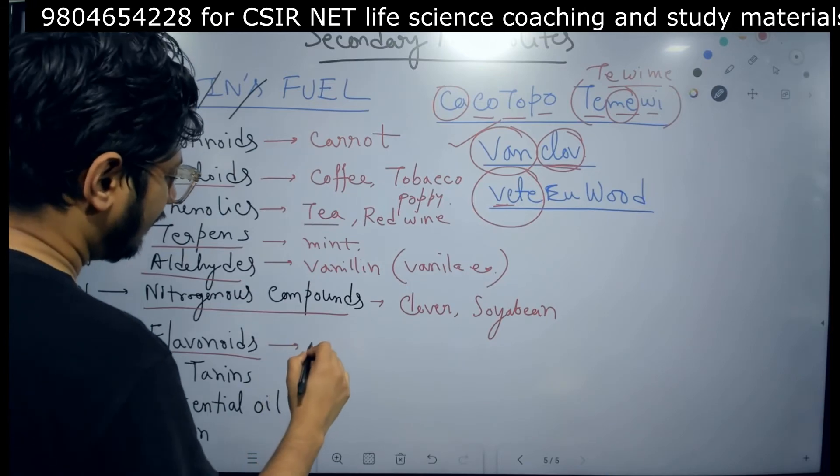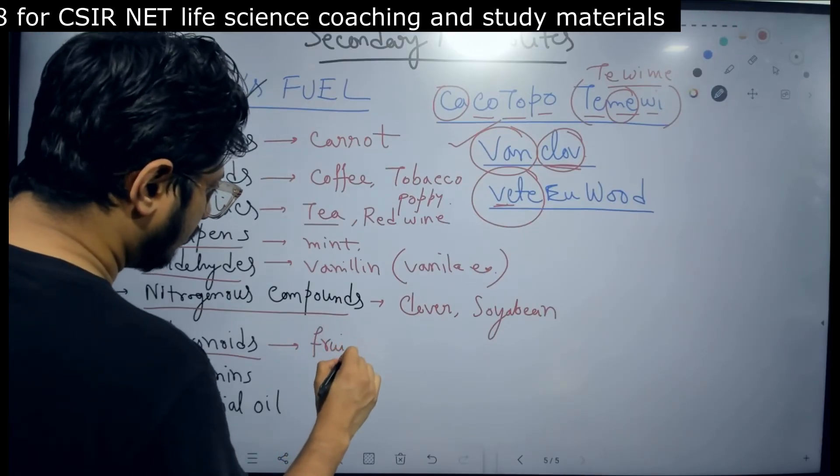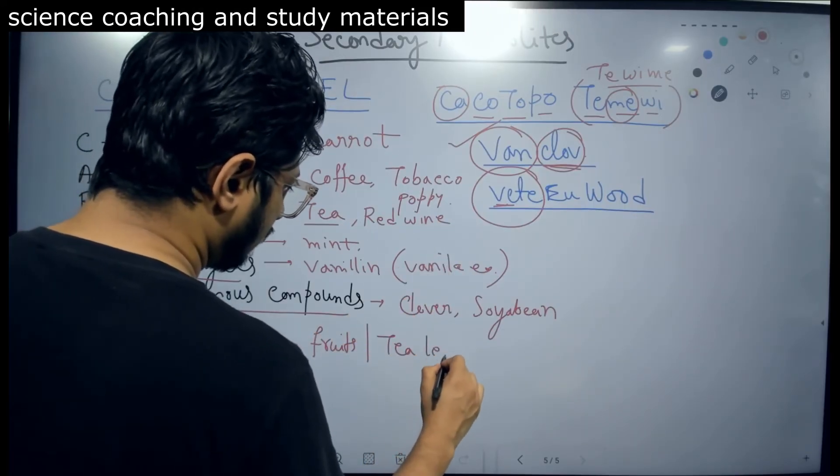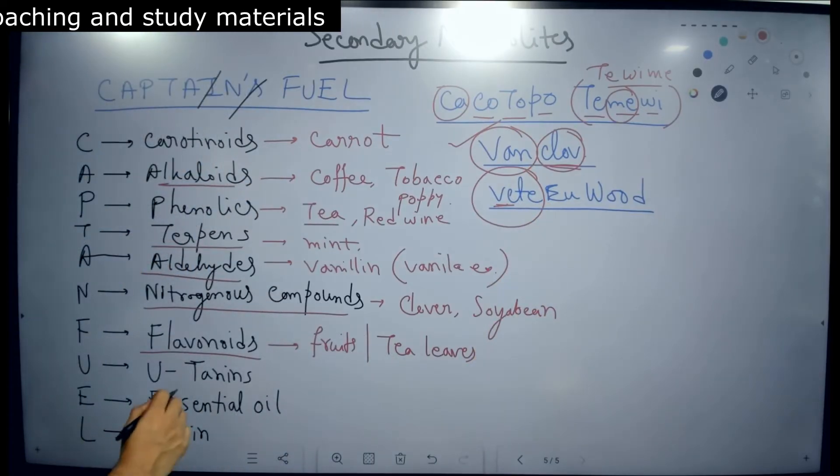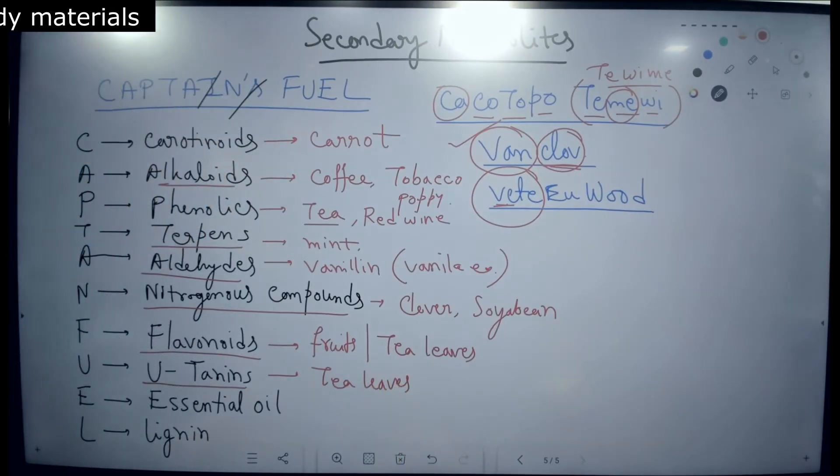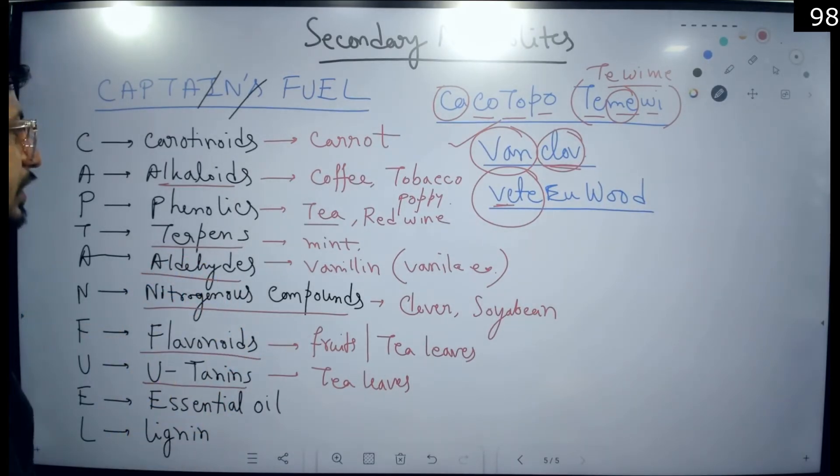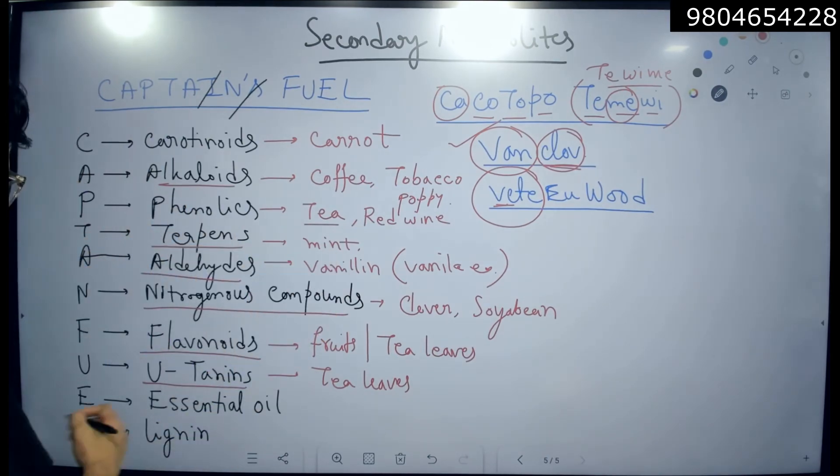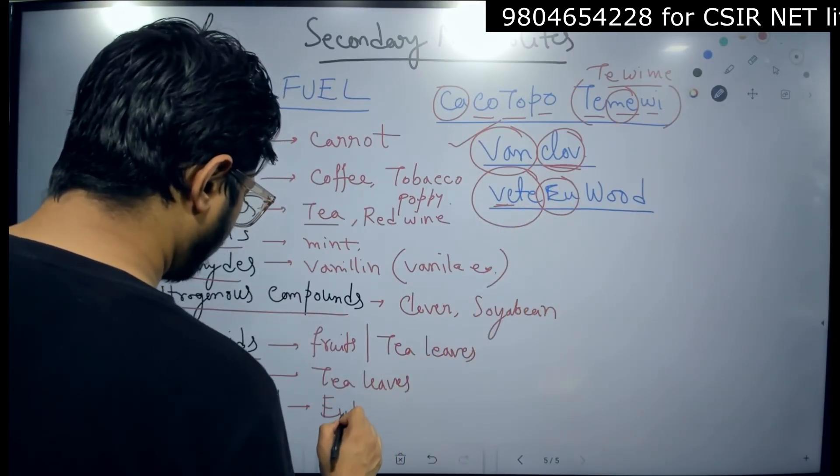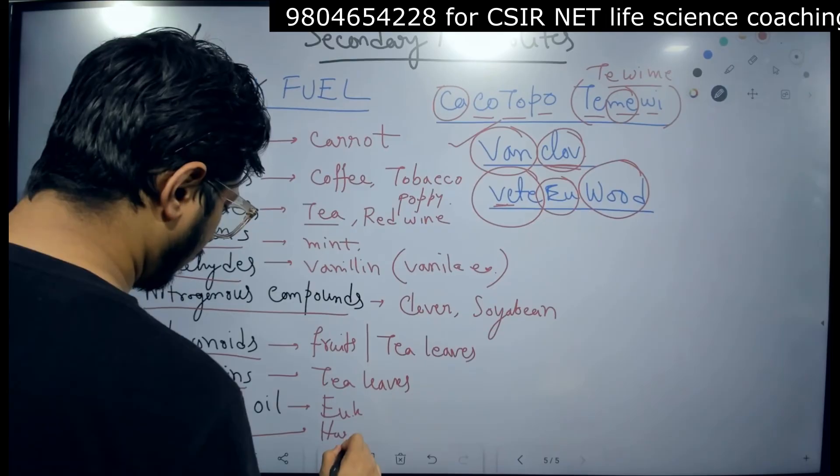The last few: flavonoids - VT. So we have in flavonoids various kinds of fruits, various fruits, berries, cherries, all of them. Then we have tea leaves. You tannins - again tea leaves are filled with you tannins. You can see the tea leaves are filled with so many things: flavonoids, isoflavonoids, tannins, phenolics, all of them are present in tea. Essential oil - U for eucalyptus. Lignin, last one, is wood, hardwood plants.